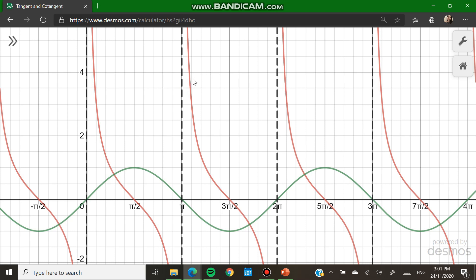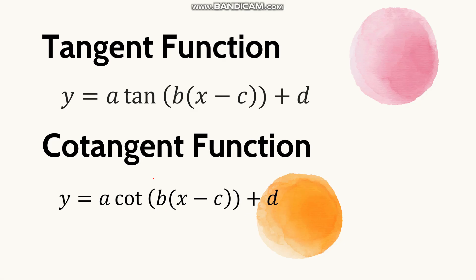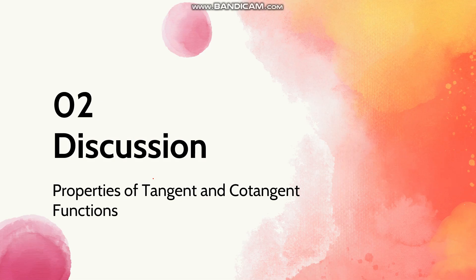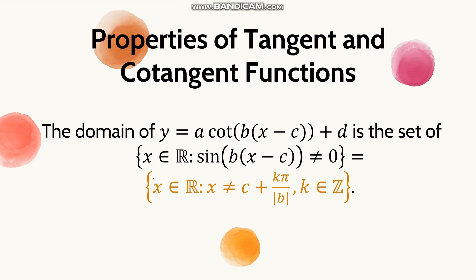Some values make tangent and cotangent undefined. For the general equation of our tangent and cotangent, it's the same as with the first four functions we discussed — we still have parameters A, B, C, and D, and they play the same role in the graphs. Now let's discuss the properties of our tangent and cotangent functions.